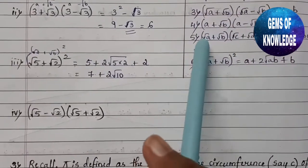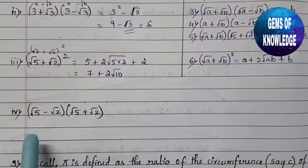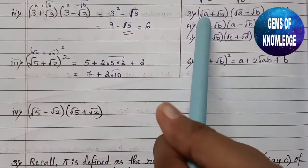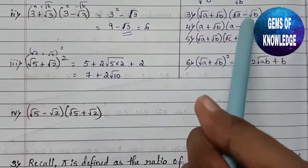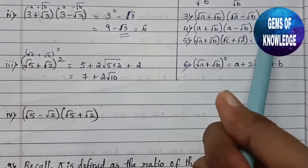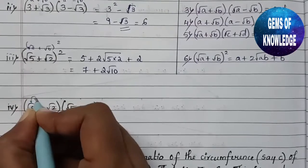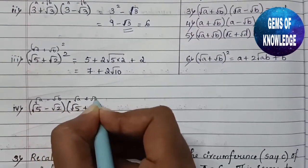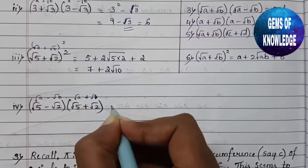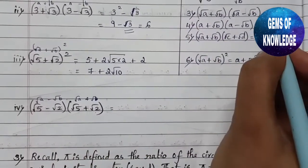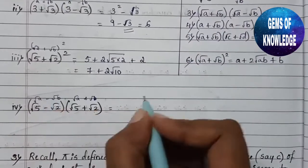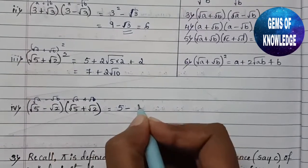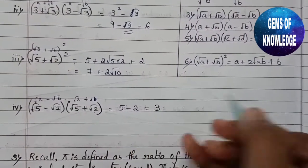The fourth expression is (root 5 - root 2)(root 5 + root 2), which is of the form (root a - root b)(root a + root b) = a - b. Here a = 5 and b = 2, so the answer is 5 - 2 = 3.